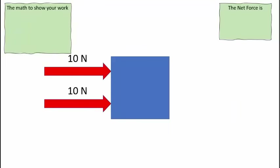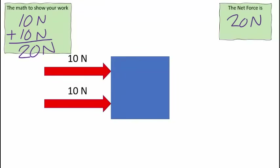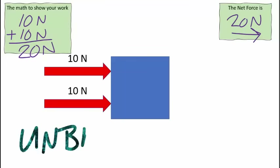In this example, they're both pushing in the same direction — they're helping each other, cooperating. If two people were pushing on that wagon in the same direction, you would add their work together. The math: 10 newtons plus 10 newtons gives me 20 newtons. So the net force is 20 newtons to the right. Is that balanced or unbalanced? It's not 0, so that is an unbalanced force.